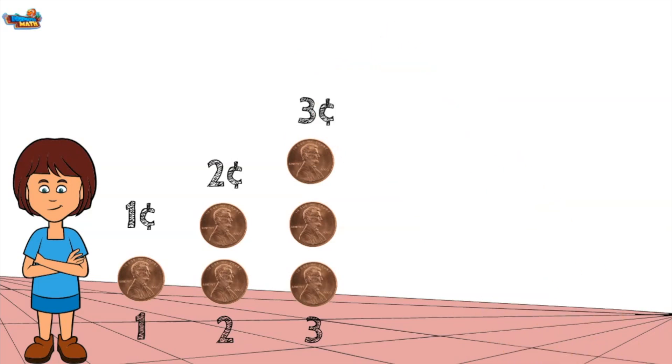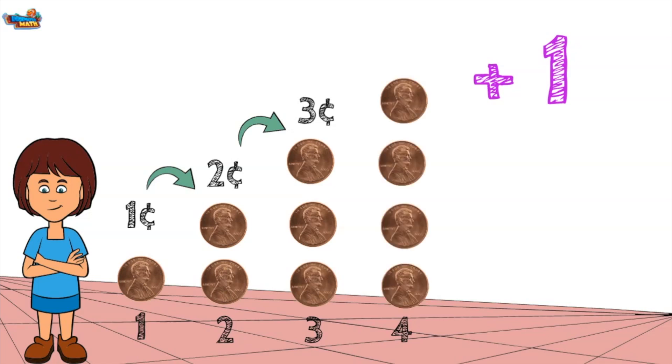To determine the rule I find the difference between group 1 and group 2. Group 2 has one more than group 1 and group 3 has one more than group 2. The rule is to add 1. Following the rule of the pattern, we should be able to determine the value of group 4's coins. We need to add 1 to group 3, for a total of 4 cents.